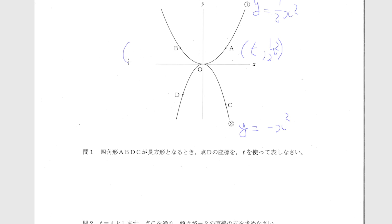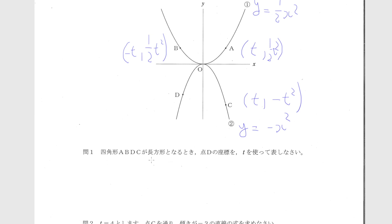この式にtを代入するとAのY座標は(1/2)t²と分かります。点BはY軸に対してAと対称なので、Bの座標は(-t, (1/2)t²)。CのX座標はtなので、y = -x² に代入するとCのY座標は -t²。Dについてはまだ分かりません。問: 四角形ABDCが長方形となるとき、DのX座標をtを使って表しなさい。